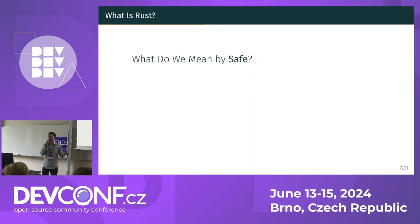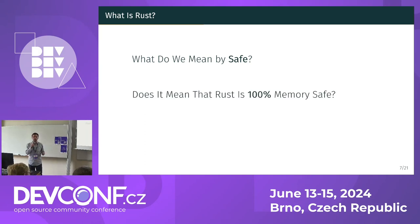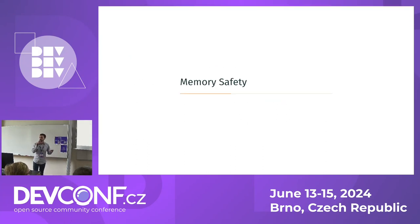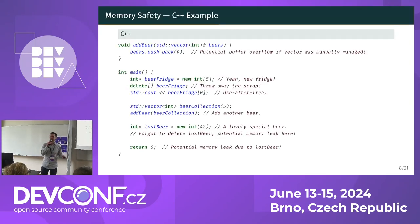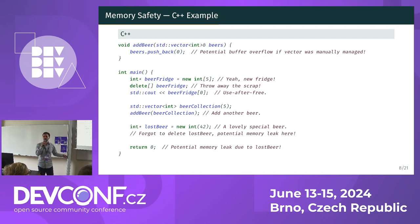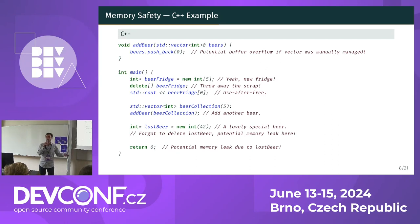We are going to answer the following questions: what do we mean by safe? Is Rust 100% memory-safe? And what about performance? Let's move to the first example, which is about memory safety. The code is in C++ and demonstrates basic vector manipulation. The example represents throwing a party — imagine you bought a new fridge that can hold five beers.